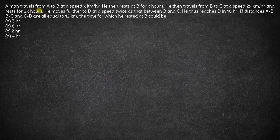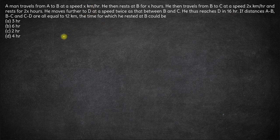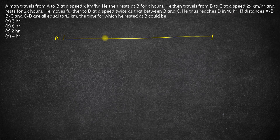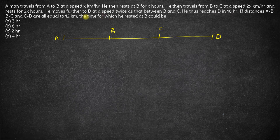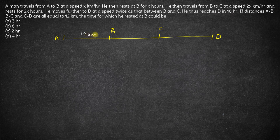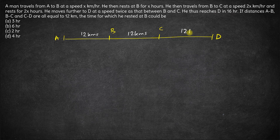Hi, here we have a man travels from A to B at a speed of x km per hour. So we have a man is traveling from A to B, then B to C and then from C to D. The distance between A, B, B, C and C, D are all 12 kilometers. So this is 12 kilometers, this is also 12 kilometers and this is also 12 kilometers.